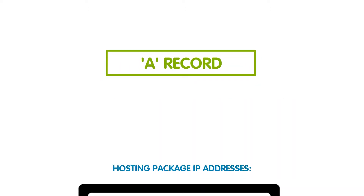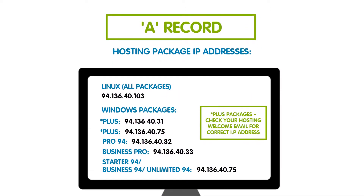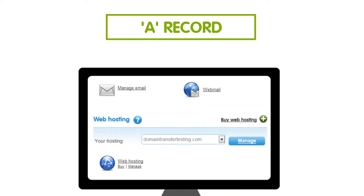For an A record, you will need to point your domain name to the relevant 123REG IP address, depending on the type of hosting package you have. If you are unsure of the type of web hosting package you have, just have a look in your web hosting control panel by clicking on Manage just here.